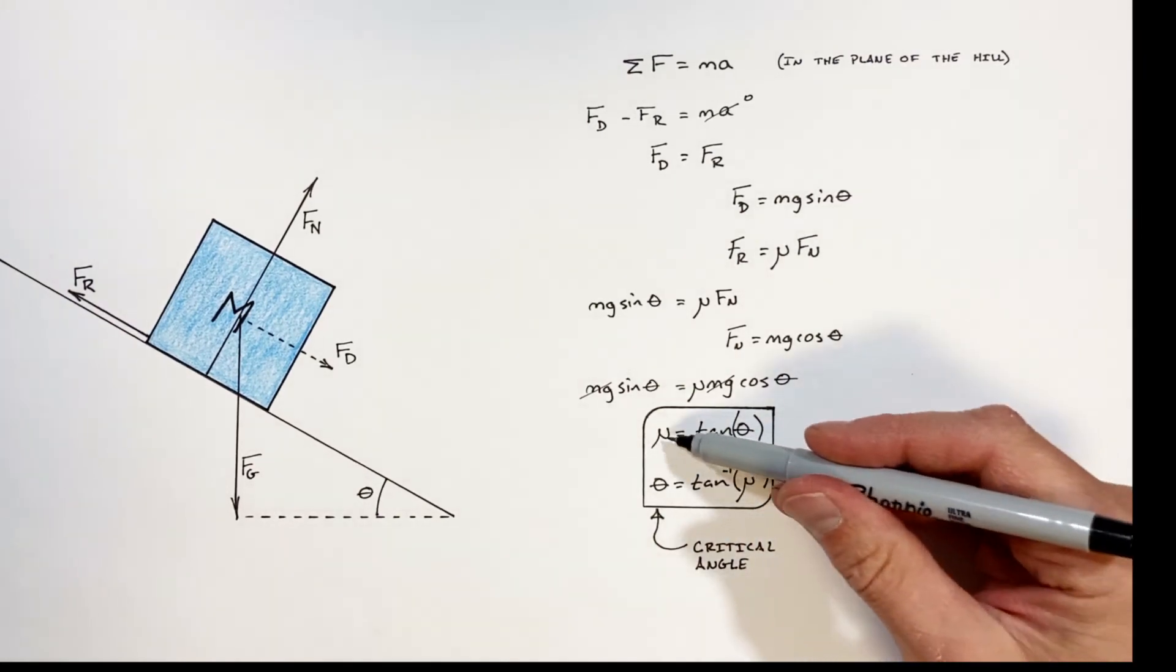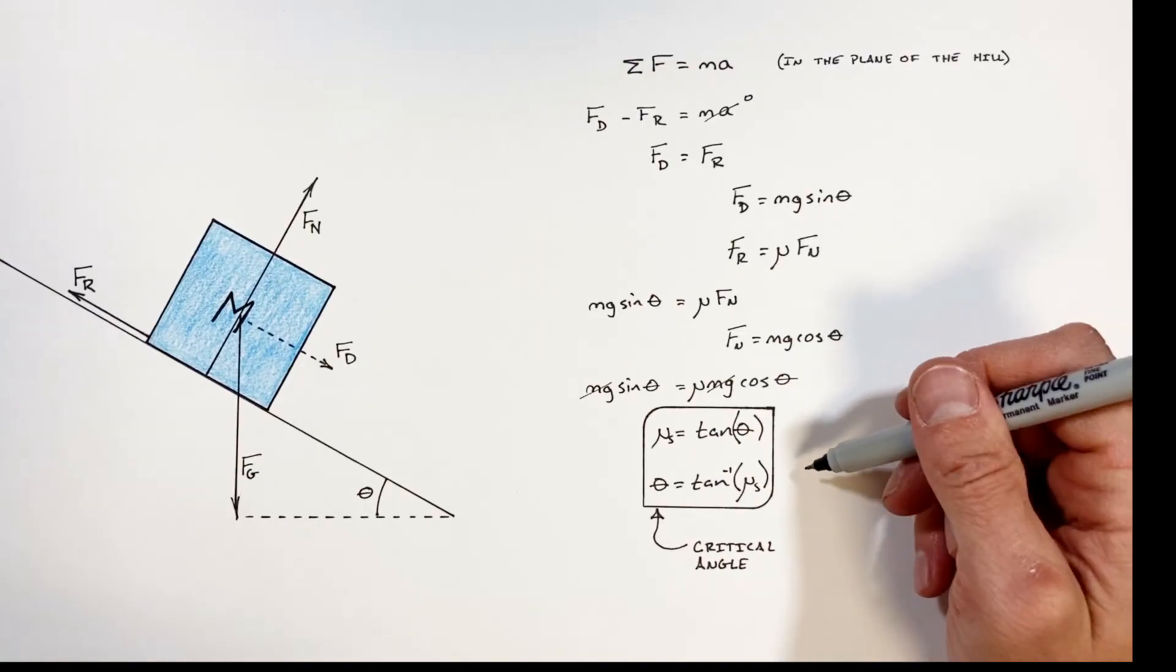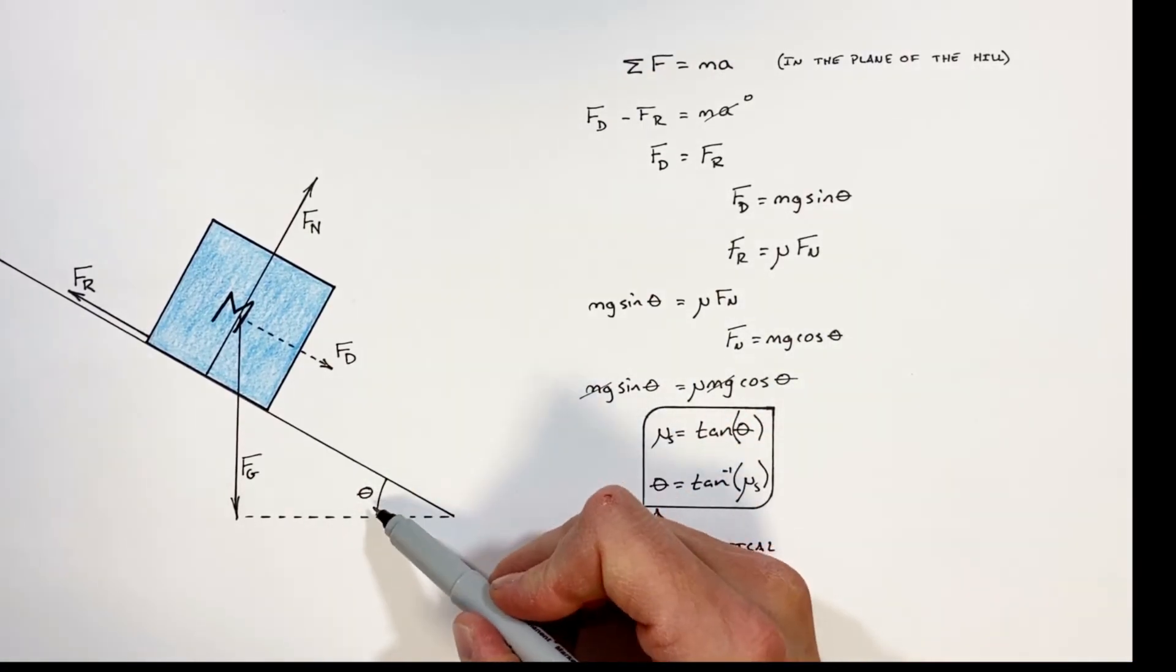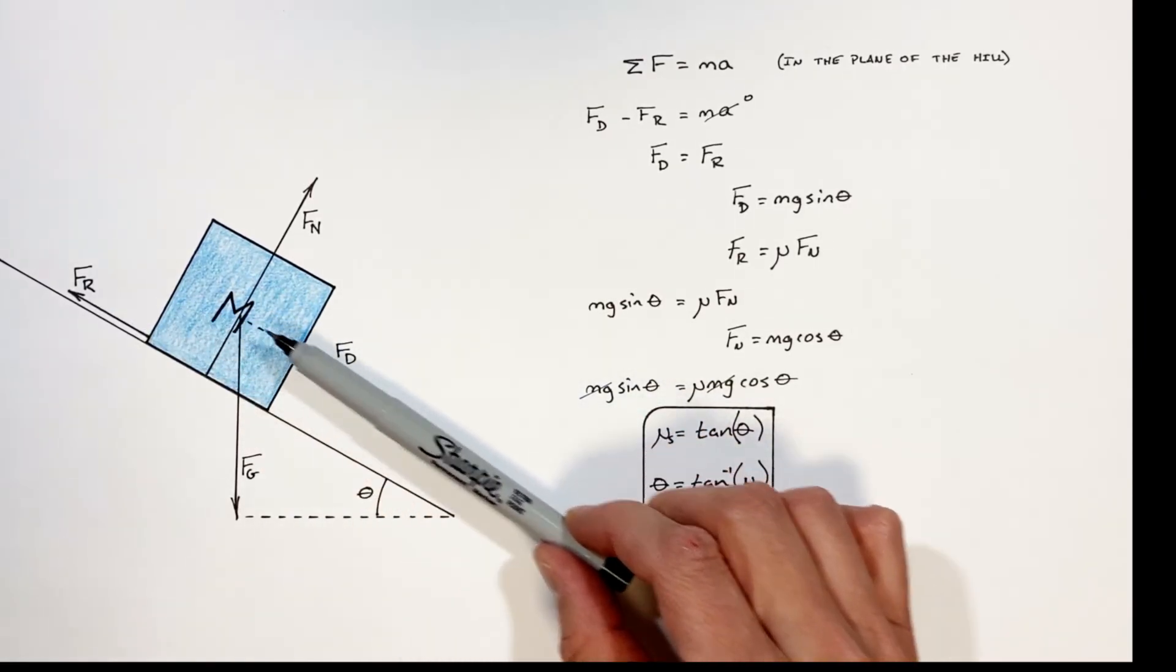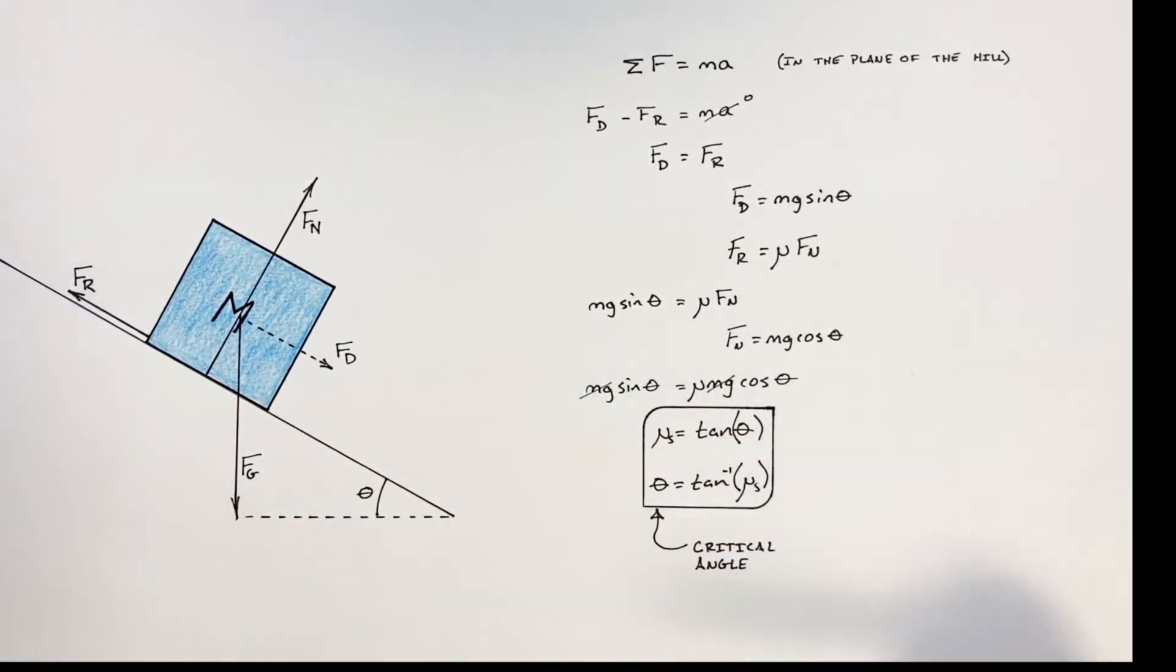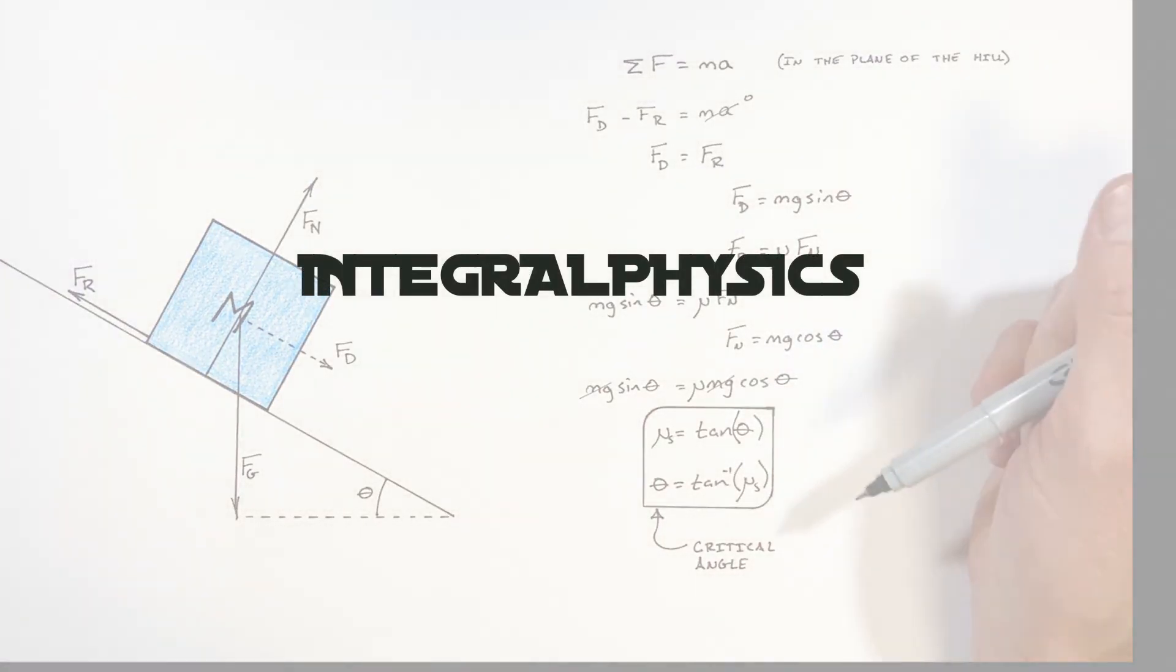Now realize this coefficient of friction is static friction. So ultimately what this result tells us is the maximum angle to which we can tilt this ramp before the block starts to slide down the ramp. So this is the critical angle problem, I hope you found this useful, and on that note, that's all for now.